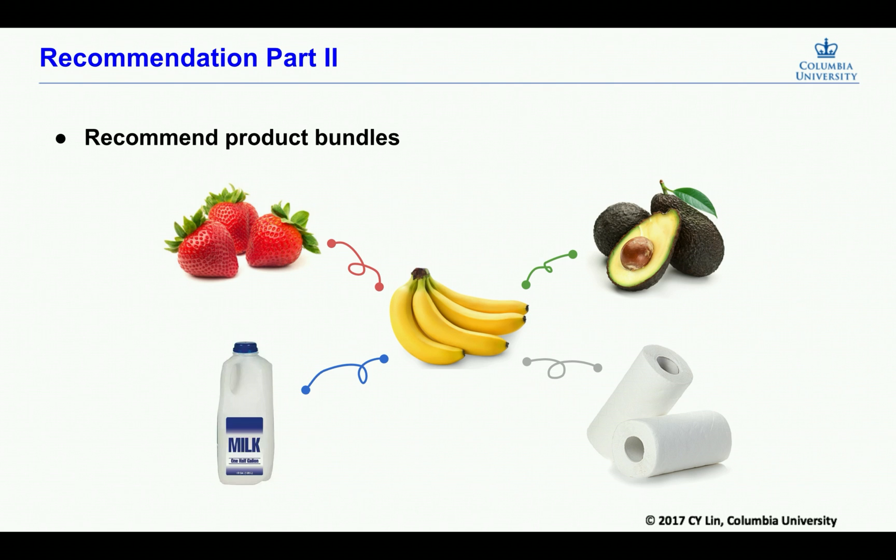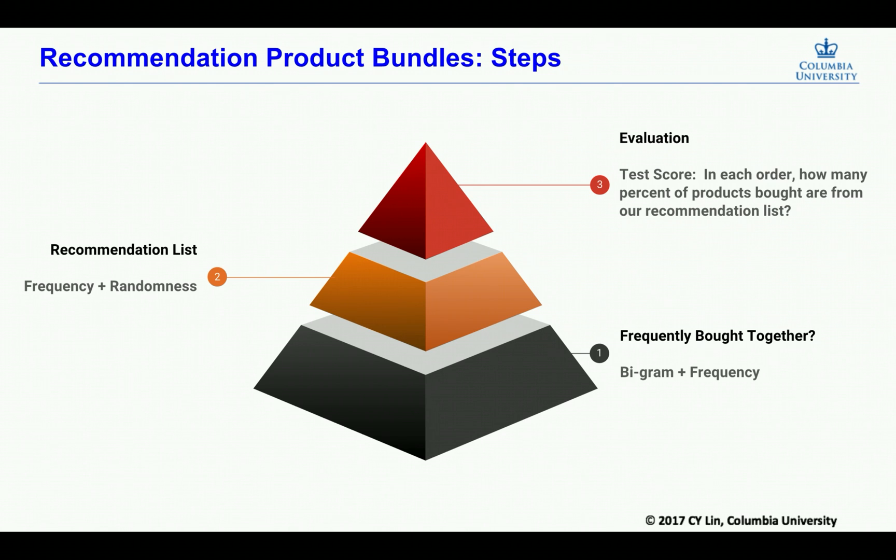The second part of recommendation is to recommend product bundles. We want to see which products are more often bought together. For example, if a customer adds bananas to cart, which product will be added to cart next? We do the calculation by using our recommendation algorithm. First, we extract some bigram features from each order and we get a frequency of each bigram. The second step is to generate recommendation lists for each product based on bigram frequency and some form of randomness. At last, we evaluate our algorithm on a test dataset and we get a test score by calculating that in each order how many percent of the products bought are from our recommendation list.